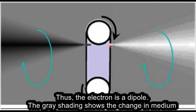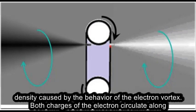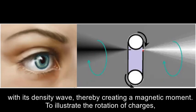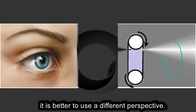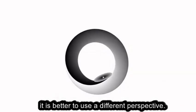The gray shading shows the change in medium density caused by the behavior of the electron vortex. Both charges of the electron circulate along with its density wave, thereby creating a magnetic moment. To illustrate the rotation of charges, it is better to use a different perspective.